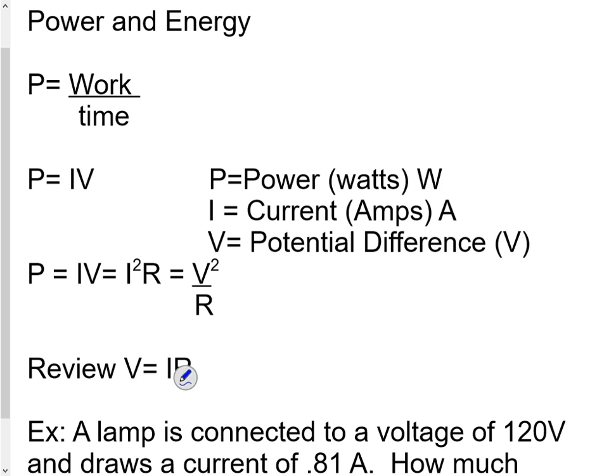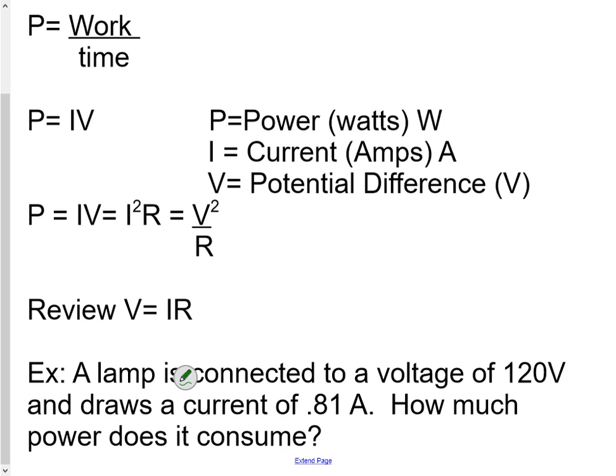Hi, welcome! Today we're going to talk about power and energy. Power is work over time, and we have an equation: P equals IV. Power is measured in watts, and we've already seen that in mechanics. I is equal to current, which is measured in amps, and V is potential difference, which is measured in volts.